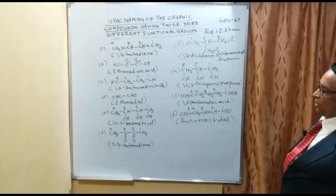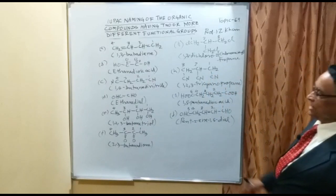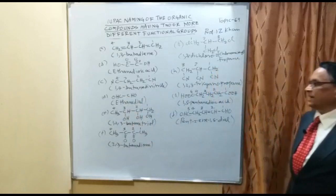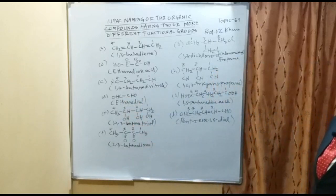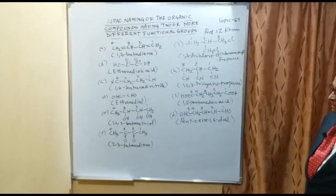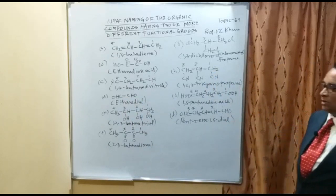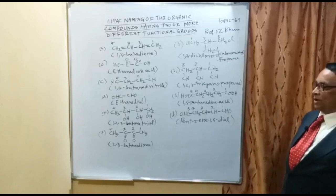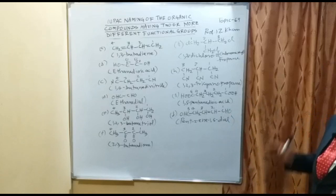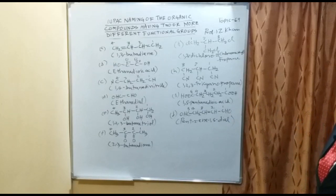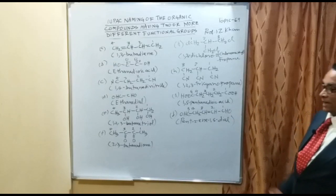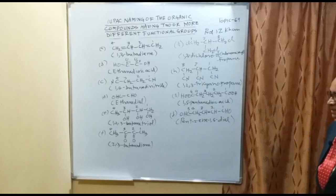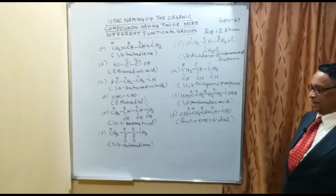In example E, the numbering is carbon 1, 2, 3, giving 1,2,3-butanetriol — 'tri' meaning 3 hydroxyl groups. Example F has two keto groups at carbon 2 and carbon 3, so it is named 2,3-butanedione.